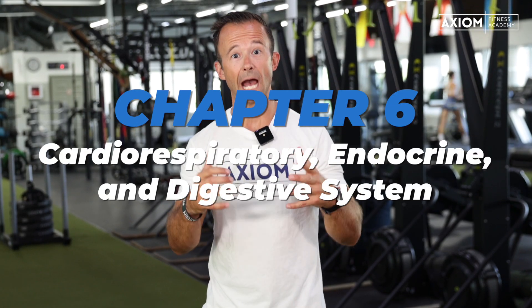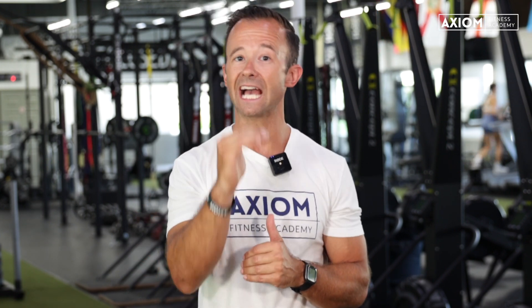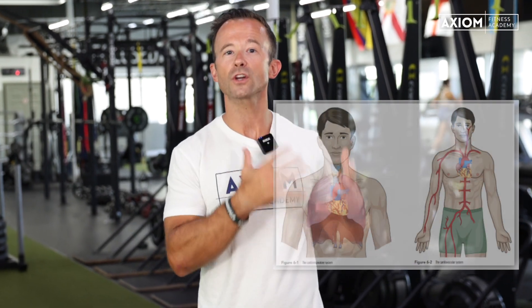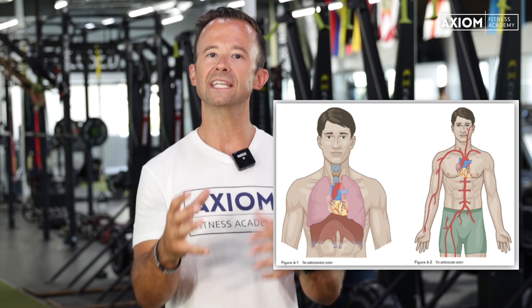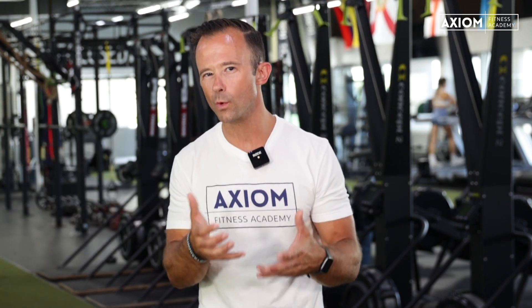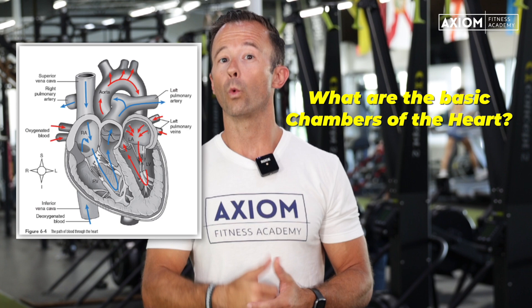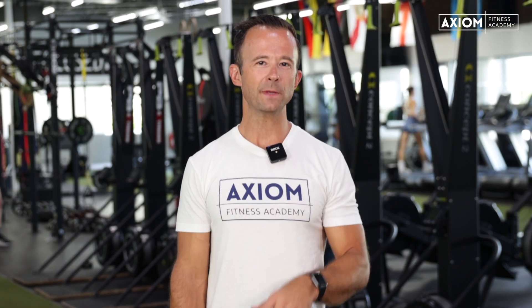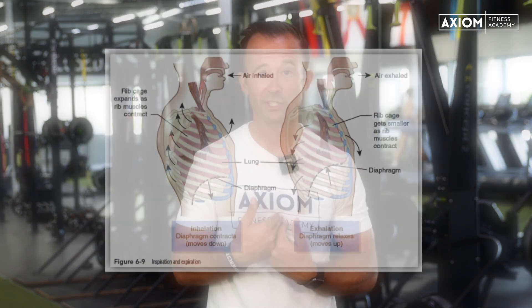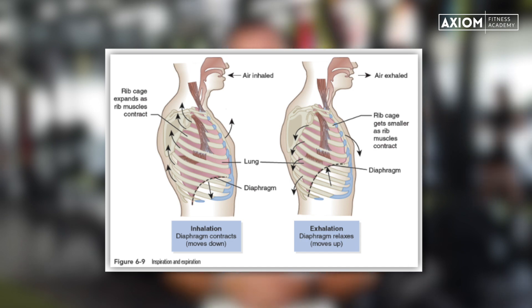Now we dive into chapter six — the cardiovascular, endocrine, and digestive systems. These are three big systems in one chapter, so NASM does not expect you to be an expert in any one of them. You want a basic understanding of how the cardiorespiratory system — cardiovascular and respiratory together — delivers oxygen and nutrients to tissues. Know the basic chambers of the heart, what the ventricles and atria are, how blood flows through it, and what muscles are involved during inhalation and exhalation.